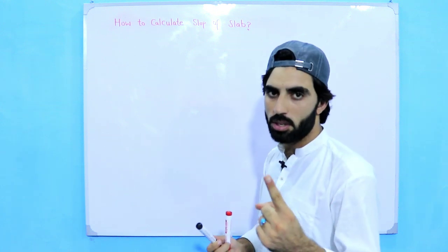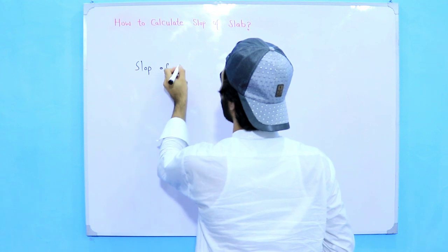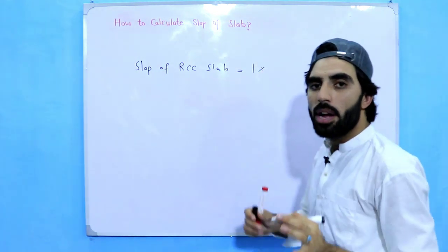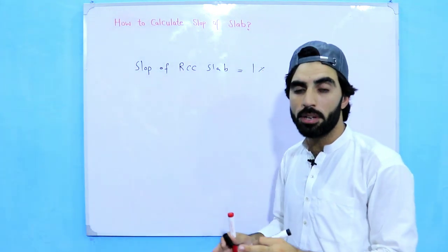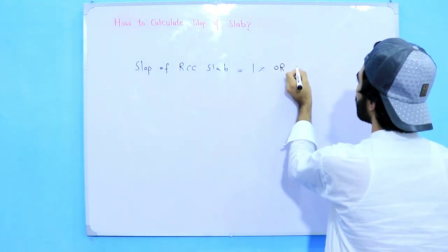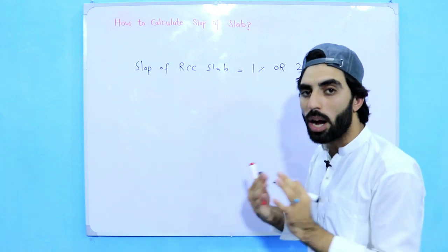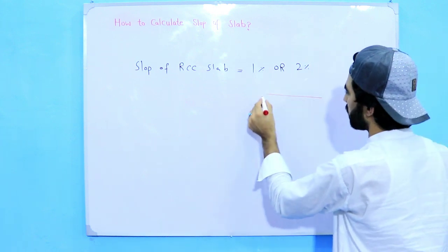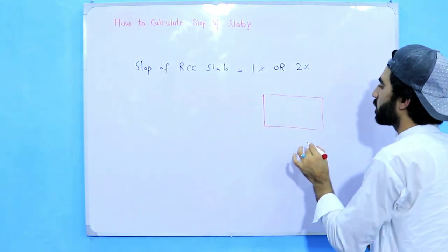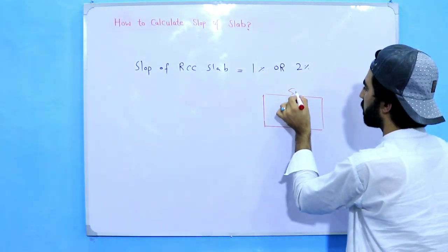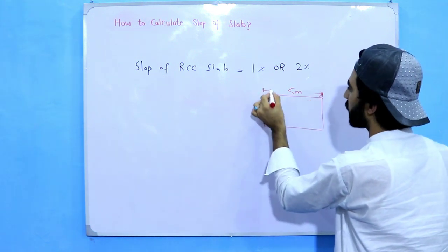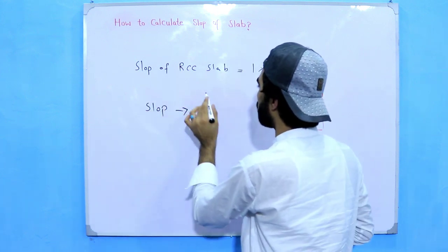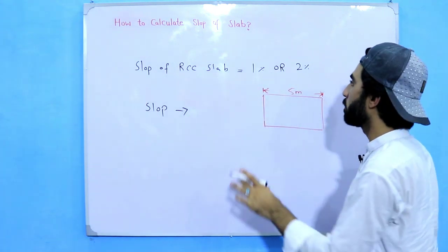The slope of an RCC slab should be one percent, and the maximum slope of an RCC slab should not be more than two percent. So how can we calculate this? For example, this is an RCC slab with a length of five meters. We want to take a slope of one percent — remember, maximum should not be more than two percent.